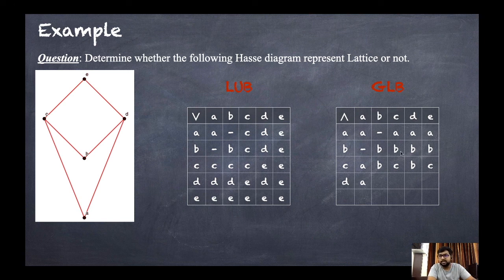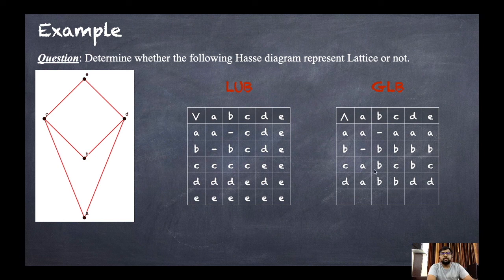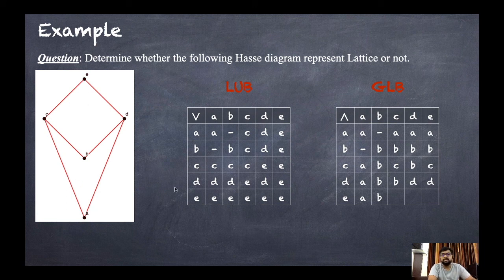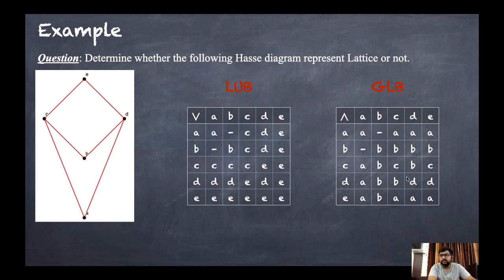GLB of c and e is c. For d: d and a is a, d and b is b, d and c is b, d and d is d, d and e is d. For e: e and a is a, e and b is b, e and c is c, e and d is d, e and e is e.